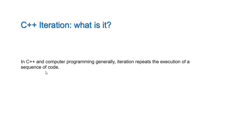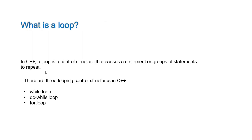In C++ and computer programming generally, iteration repeats the execution of a sequence of code. In C++ and many other programming languages, there is this concept of control structures. This concept directs the flow of a program and it involves looping. A loop is a control structure that causes a statement or groups of statements to repeat. We have different types of looping control structures in C++ and they include the while loop, the do-while loop, and the for loop. We will look at all of them one at a time.